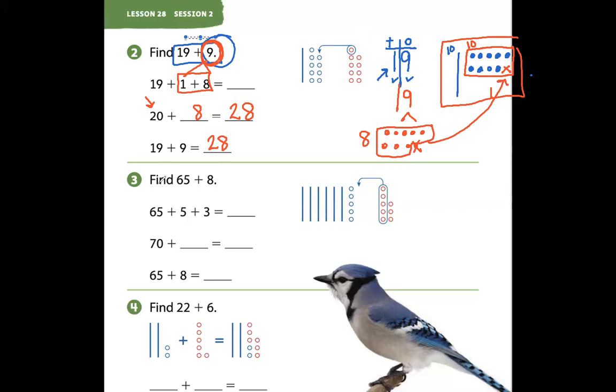The next problem 3 says find 65 plus 8 and it says 65 plus 5 plus 3. Let's look at this in tens and ones. Think about the number 5 in 65. How many more do you need to get to the number 10? Five. That's our addition double, 5 and 5 make 10. So they took that 8 and redistributed it.